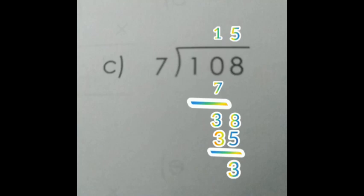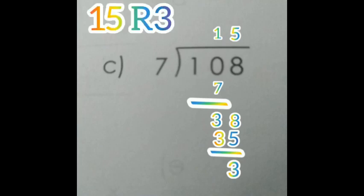How many times we will get 38 from 7 table? 5 times 35, 6 times 42. 42 is greater than 38, so we should not consider 6 times. Consider 5 times, then we will get 35. Subtract 38 minus 35, then we will get the answer as 3. Do we have any other number after 8 in the dividend? No, so we have to stop up to this. Therefore, the quotient is 15 and the remainder is 3. We can write the answer as 15 R 3.